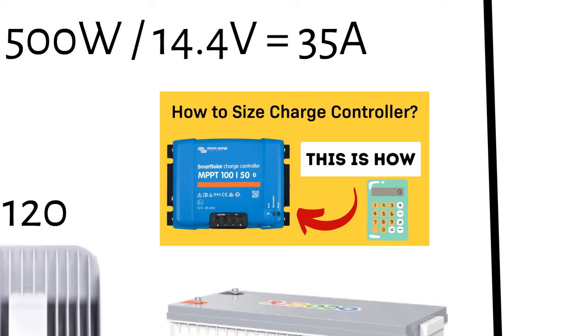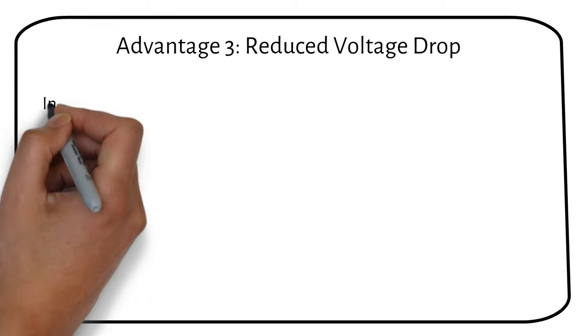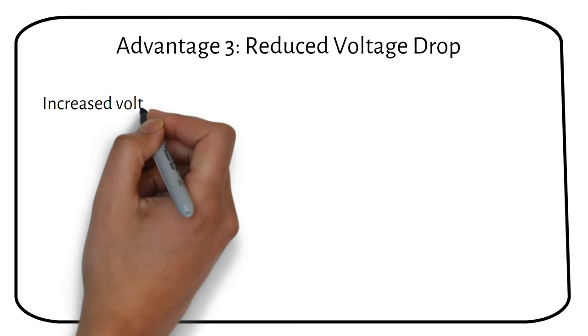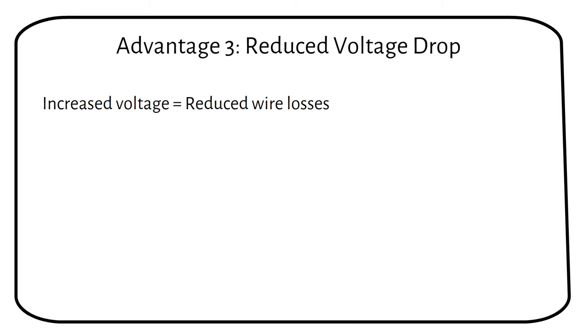The same holds true for battery chargers. Less current equals reduced cost. A third but smaller benefit is that voltage drop will be reduced. If we increase a voltage, there will be less of a voltage drop, leading to less power loss in the wire.